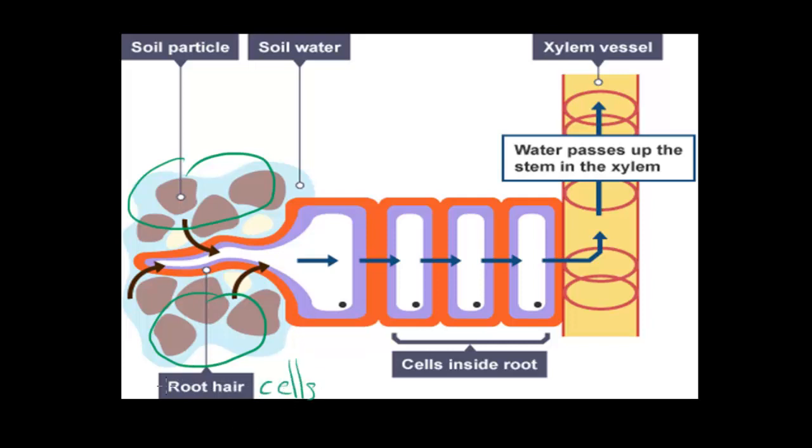These cells here, the root hair cells, can absorb water from the soil so they can transport it to the rest of the plant. These root hair cells have a mechanism to keep their water potential low. So the soil will have high water potential, therefore more water will move inside the root hair cells.